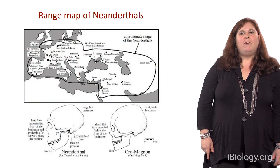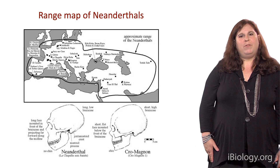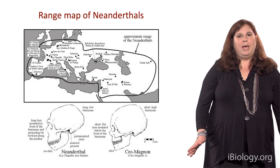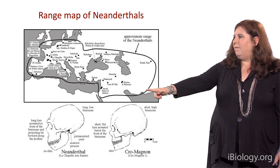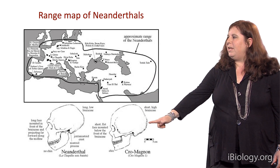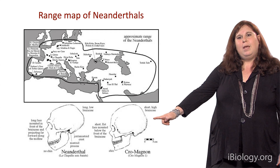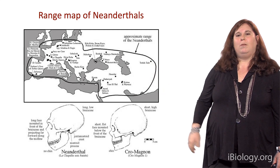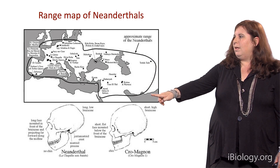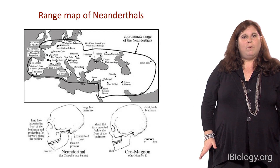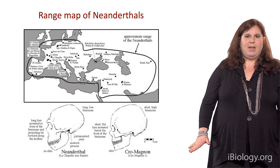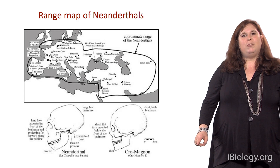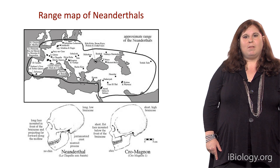Interestingly, when modern humans migrated out of Africa within the past 50,000 to 100,000 years, they would have run into Neanderthals — they overlapped in their distribution. Shown here is the distribution of Neanderthals. The modern humans who lived at that time were referred to as Cro-Magnon. We did not see anatomically modern humans in Europe until about 40,000 years ago, a bit earlier in the Middle East. It appears they overlapped for at least 10,000 years with Neanderthals, and as we'll discuss later, there is evidence of possible admixture between Neanderthal and anatomically modern humans during that time.